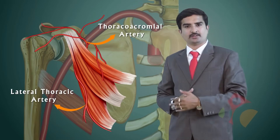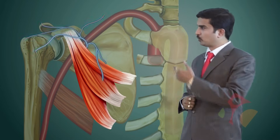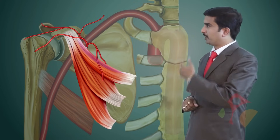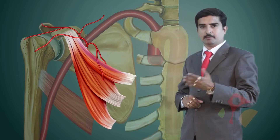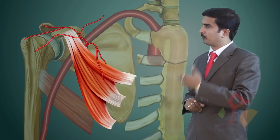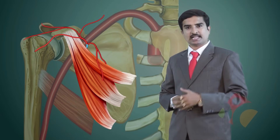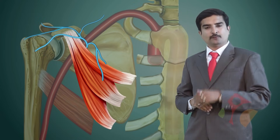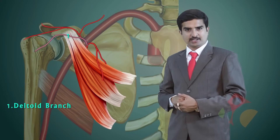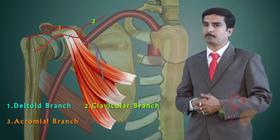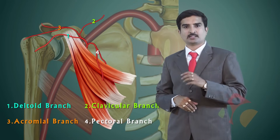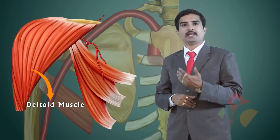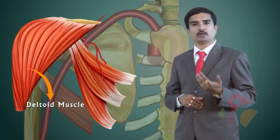The thoracoacromial artery arises from the upper border of the pectoralis minor muscle. Immediately after arising, it pierces the clavipectoral fascia, then divides into four branches: the deltoid branch, the clavicular branch, the acromion branch, and the pectoral branch. These four branches supply their respective regions. For example, the deltoid branch supplies the deltoid, and finally it ends up supplying the acromion process or the coracoacromial joint.